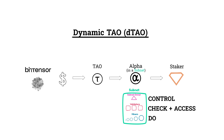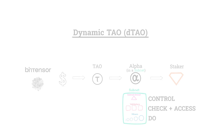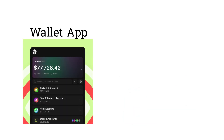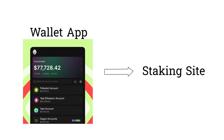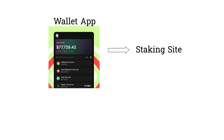If you want to purchase alpha in a subnet, the simplest way to get started is by downloading a wallet extension that works for BitTensor — I use Talisman. Once you've sent tau to it, you can use a site like tau.app or taustats.io to convert your tau to alpha. I have a separate video on how to stake safely and avoid pitfalls.